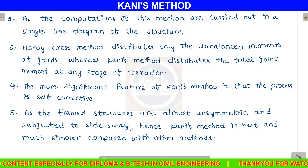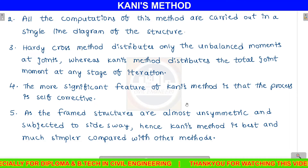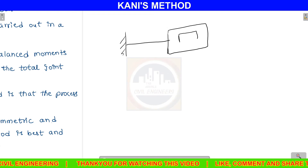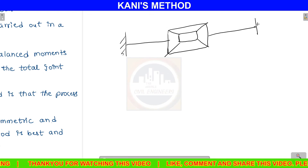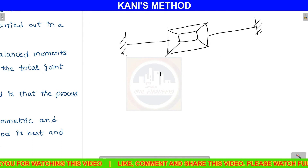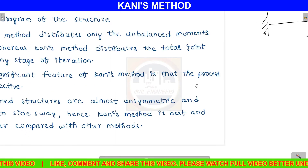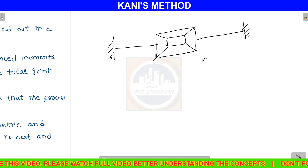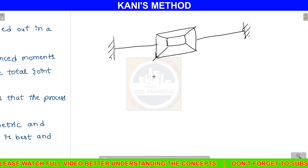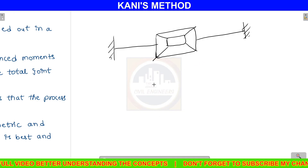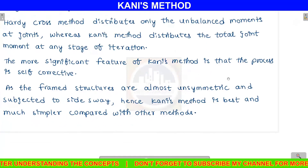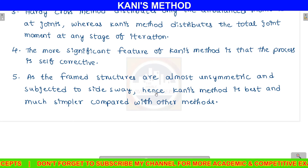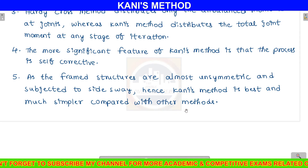A more significant feature of Kani's method is that the process is self-corrective. If any error occurs — for example, if a wrong value is written instead of the calculated value — that error will be automatically eliminated in subsequent iterations. Additionally, since framed structures are almost symmetric and subjected to side sway, Kani's method is the best and simpler method compared with other methods for analyzing such frames.